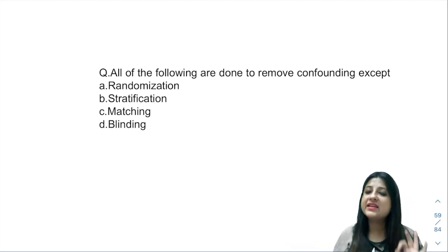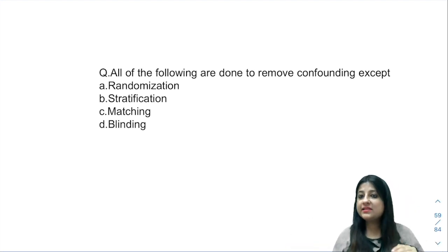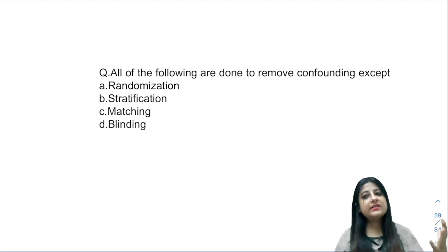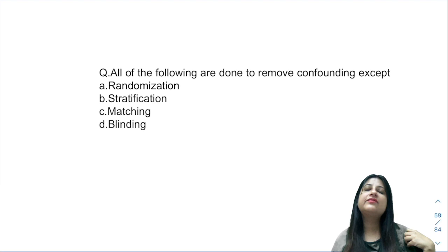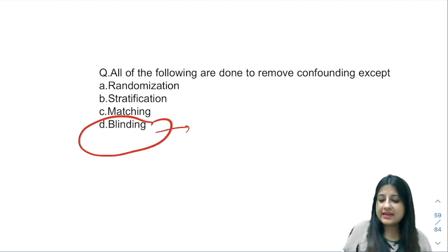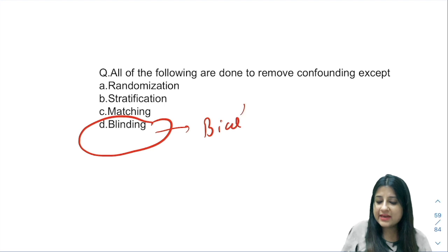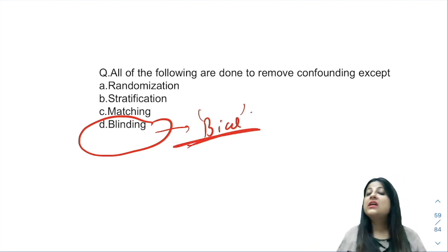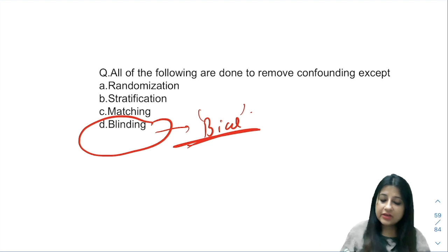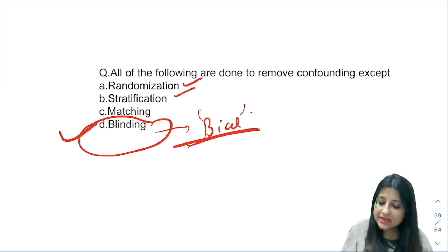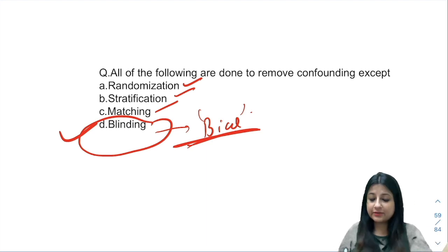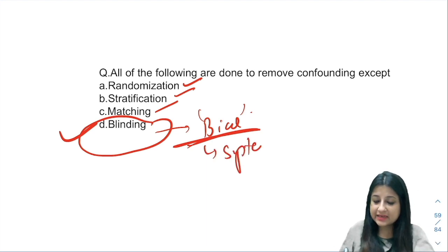Please remember it's very simple. Don't consider confounders as a bias. In certain books they mention confounding bias, but technically blinding is done to eliminate bias — it's not done to eliminate confounders. For confounders we can have randomization, stratification, and matching, but to eliminate bias, because bias is a systematic error.